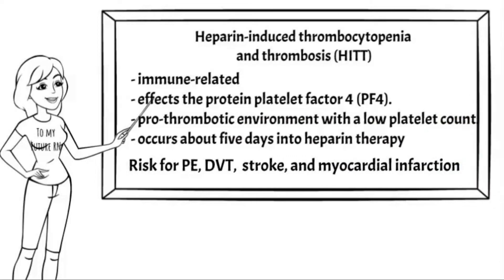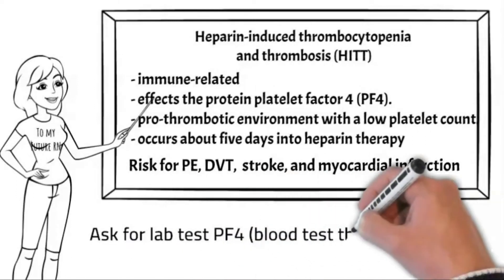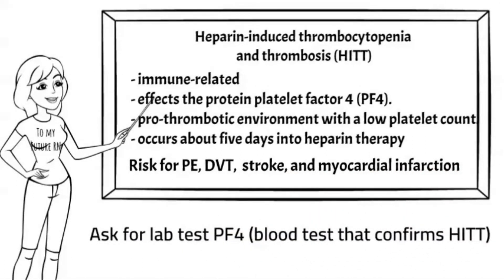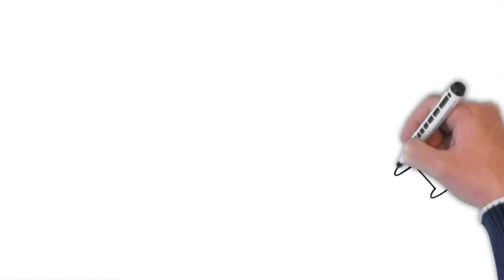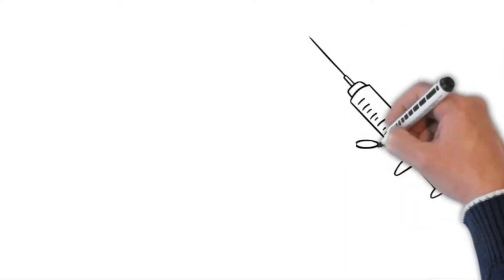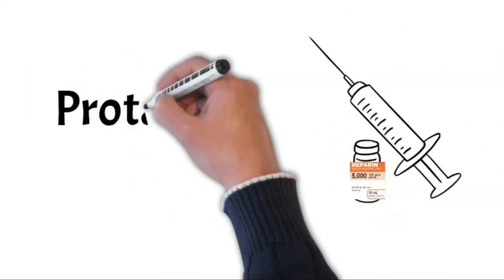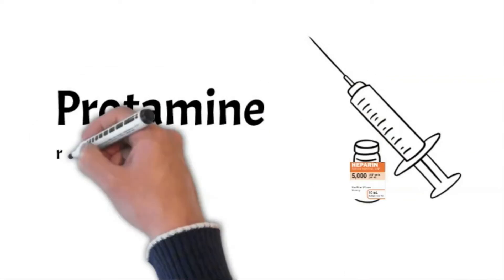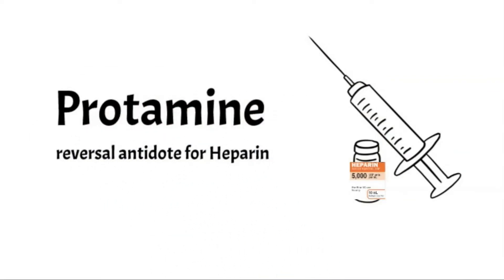If you suspect HIT in your patient, ask to draw a PF4, which is a blood test to confirm HIT. If you are administering heparin, you should know the antidote in case complications occur. Protamine is a medication used to reverse and neutralize the anticoagulant effects of heparin.